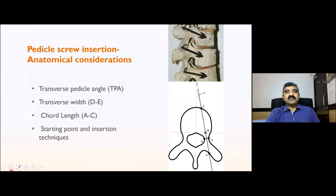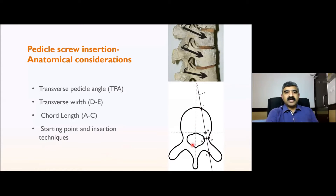Basic anatomy of the thoracic pedicle. For pedicle screw insertion we should know about four dimensions of a pedicle: one is the transverse pedicle angle, the transverse width of the pedicle, the cord length or screw length from the starting point to the anterior cortex of the vertebra, and the starting point and insertion techniques.